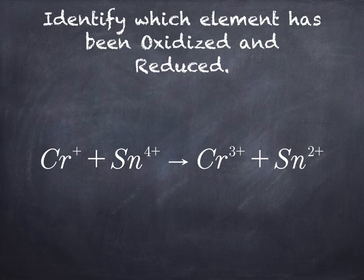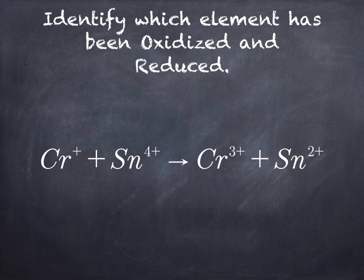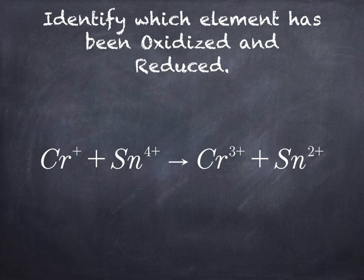So we have Cr and Sn, chromium and tin. You have Cr+ and Sn4+, and it goes to Cr3+ and Sn2+. It asks you to identify which one has been oxidized and which one has been reduced.